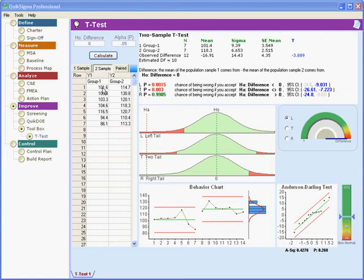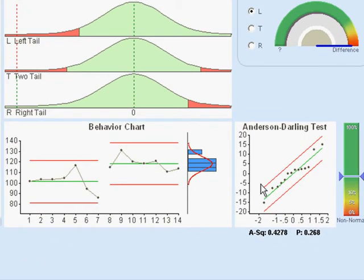Down here we're checking the assumptions that are necessary for making the test. One is that the data subgroups are normally distributed, and we see that as far as we can tell they are. The slider bar is in the green.